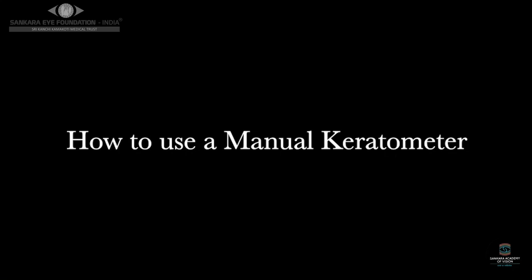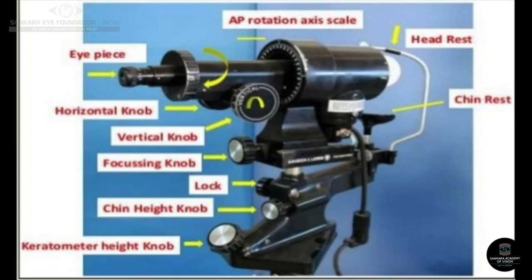Now we come to demonstration of how to use a manual keratometer. These are the parts of a manual keratometer. We can see the eyepiece, which is used for focusing. Then the chin height knob, the headrest knob, the chin rest, and the headrest where the patient aligns himself. Then the keratometer height knob at the bottom to adjust the mires over the patient's cornea. Then the focusing knob to exactly align the mires, and thereafter the horizontal and vertical knobs to align the axis in both meridians, along with the anterior-posterior rotation axis scale for oblique or irregular astigmatism.